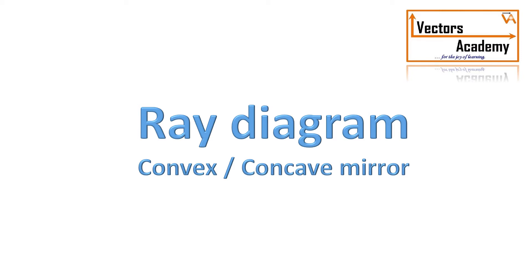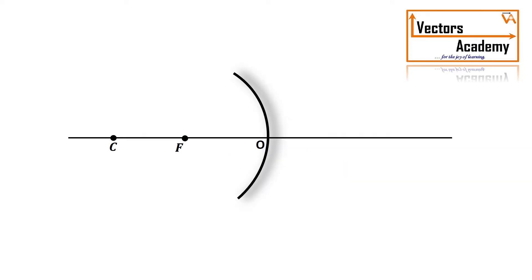Let us understand the ray diagram for the concave and convex mirrors. Consider a concave mirror. In this diagram, O represents the center of the concave mirror, F indicates the focus, and C is the center of curvature. The distance OC is 2 times the focal length.